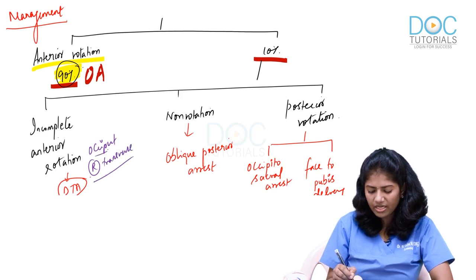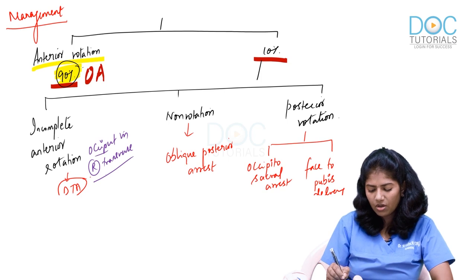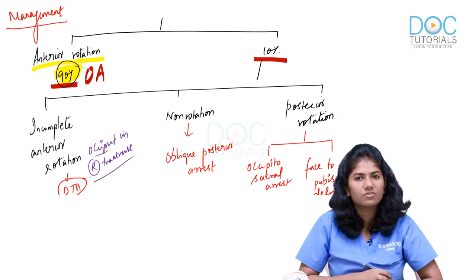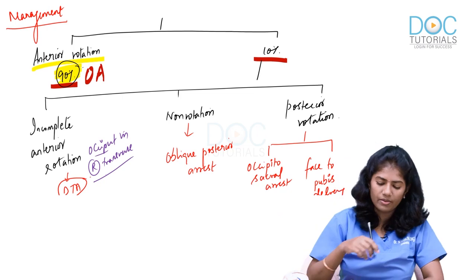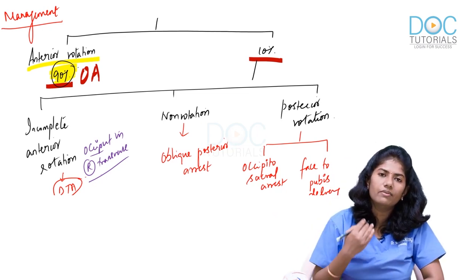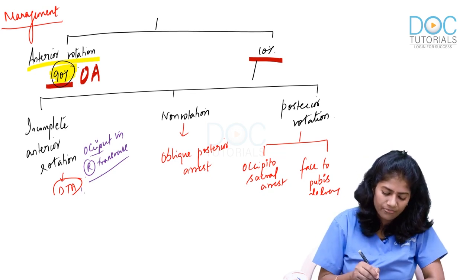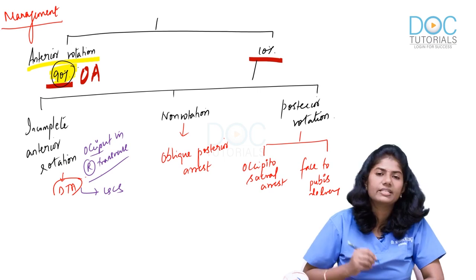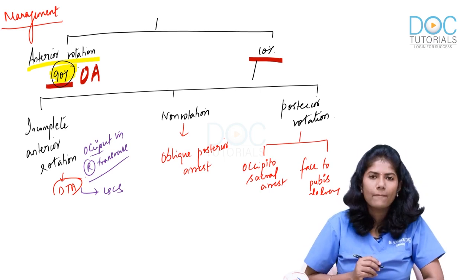Why is it usually described as right transverse? Because right occipito-posterior is the most common. In deep transverse arrest, delivery is by caesarean section.